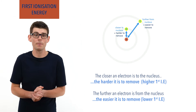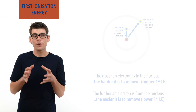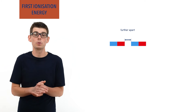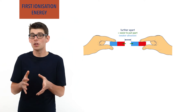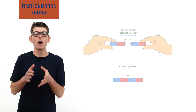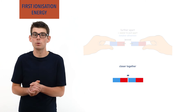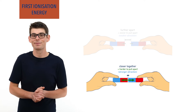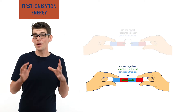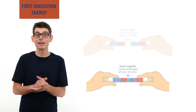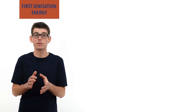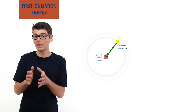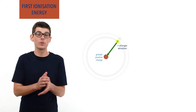It's a bit like having two bar magnets. The further apart they are, the easier it is to pull one away from the other. The closer together they are, the harder it is to pull one away, meaning more energy is required. There is a balance between the impact of the size of the positive charge from the nucleus and the distance an electron is from the nucleus.